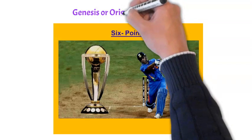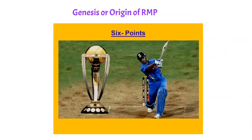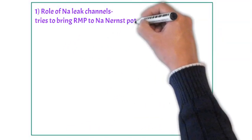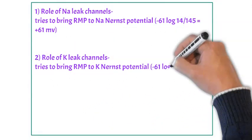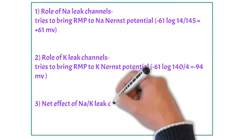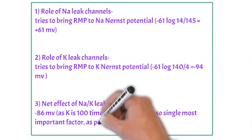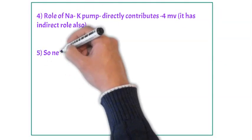Now genesis of RMP, how to write in the examination? We suggest these six points to write. Point number one is role of sodium leak channel which tries to bring RMP towards sodium Nernst potential plus 61 millivolt. Then second is potassium leak channel towards potassium Nernst potential minus 94 millivolt, and net effect is minus 86 mainly by potassium. Point number four is role of sodium potassium pump, minus 4 millivolt.